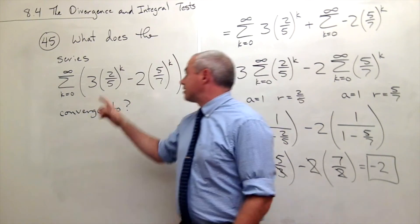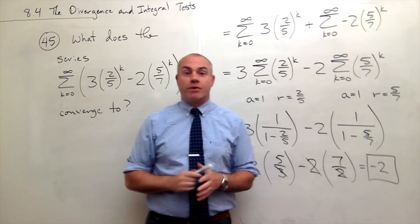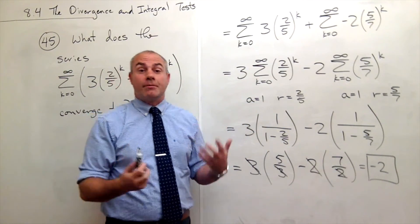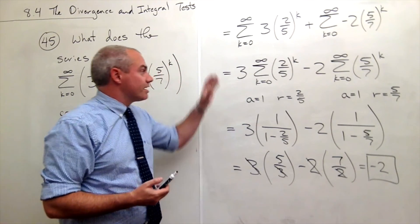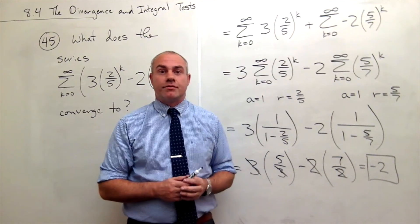So this big series right here, just by breaking it down into smaller and smaller pieces until I see that I'm just dealing with geometric series, I'm able to sum this thing up, and I see it sums up to negative two.